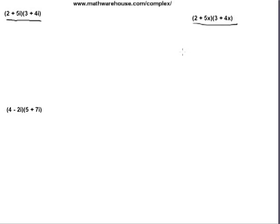2 plus 5x times 3 plus 4x. There's a good chance that you were told to use a method called FOIL, where you multiplied the first 2 by the 3, 2 times 3, which gives you 6. Then you did the outers, 2 times 4x, that's the O in FOIL, 2 times 4x, which gave you 8x.